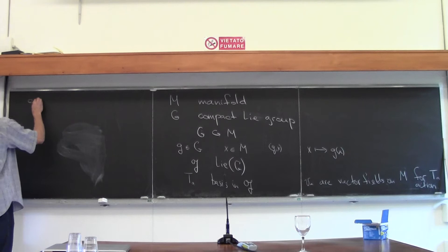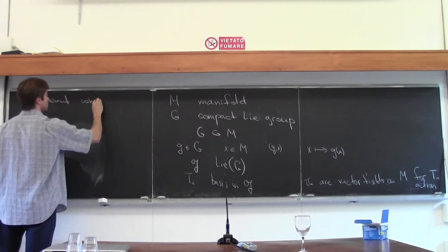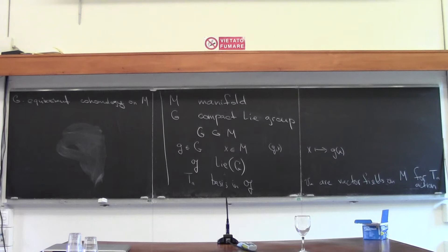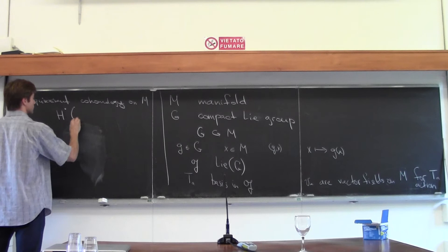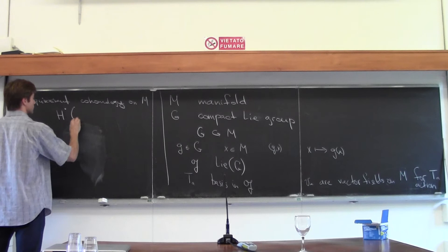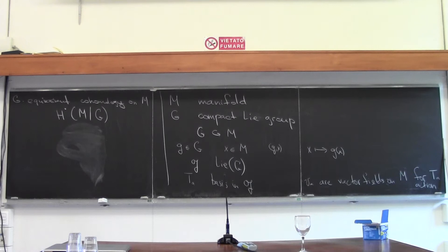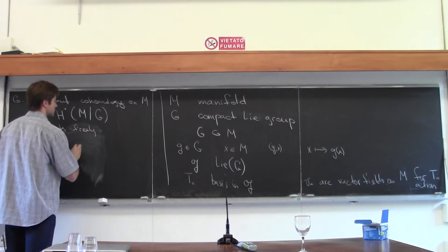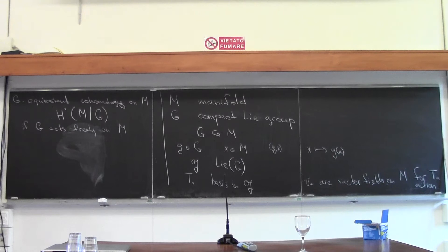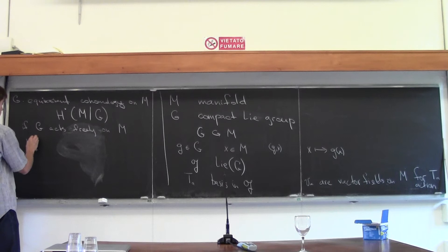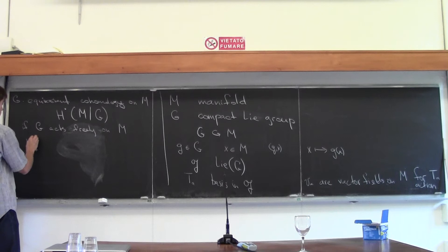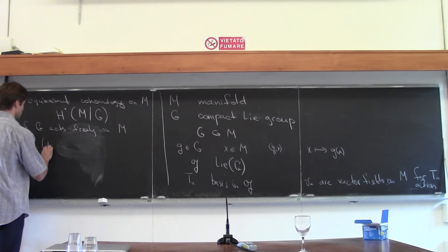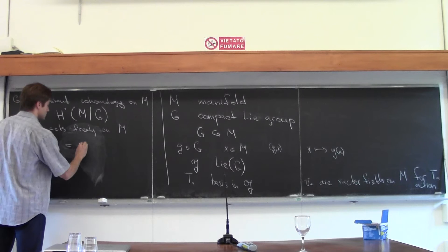So, what is equivariant cohomology? What G-equivariant cohomology tries to compute is essentially the cohomology of the quotient space M mod G. The situation is simple if G acts freely on M so that there are no fixed points — then this quotient is a good smooth manifold. To find the equivariant cohomology, denoted with subscript G, the equivariant cohomology of G on M would equal the cohomology of the quotient M mod G.